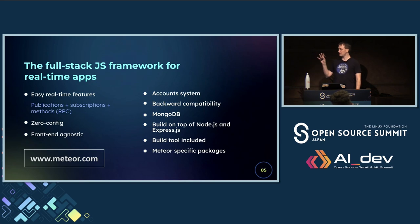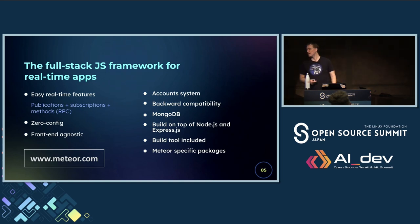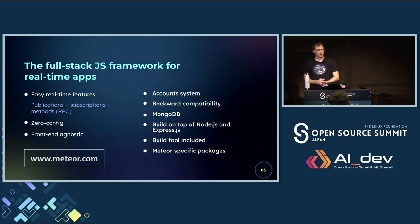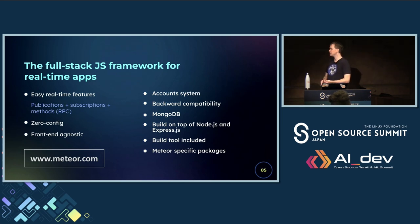Through publication and subscription, you subscribe to a set of data and then Meteor watches the data for you. If something changes in that dataset, it will push it to the client where it's kept locally. If you want to change something, you use methods, which are RPCs to change the data — you could say the holy trinity. It's super easy with zero config to get started. Today it's also front-end agnostic, and it's very well known for its account system — just add a few packages and you have a full-fledged account system without any expensive SaaS.